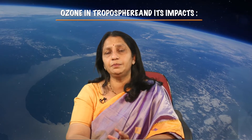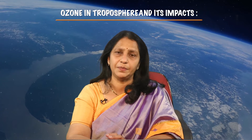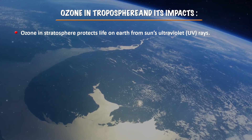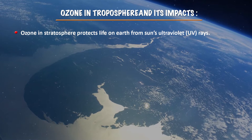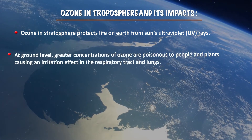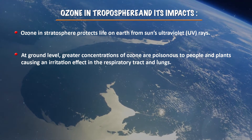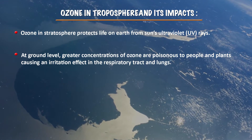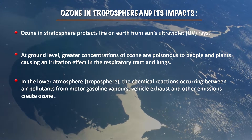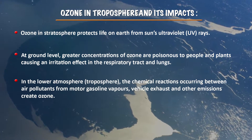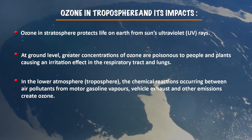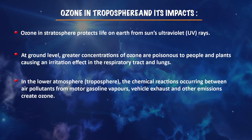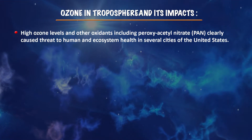The second impact is ozone in the troposphere. Ozone is present in the stratospheric region, where it protects life on Earth from the sun's ultraviolet rays. However, at ground level, higher concentrations of ozone are poisonous to human beings and plants, causing irritation in the respiratory tract and lungs. In the lower atmosphere — the tropospheric region — chemical reactions between air pollutants from vehicular fuels, motor gasoline vapors, and vehicle exhaust create ozone.